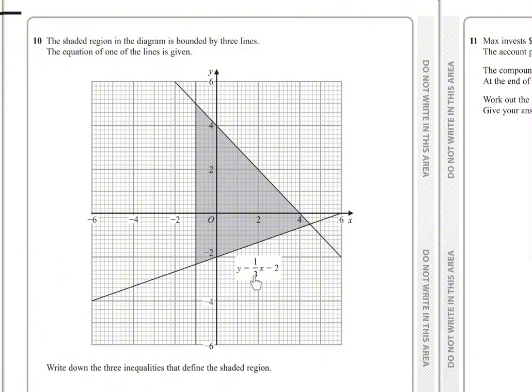The equation y equals 1/3x minus 2. We need the region above the line, and this is a solid line. So the first inequality: y more than or equal to 1/3x minus 2.